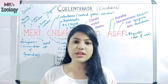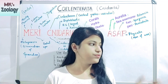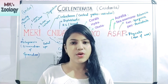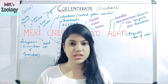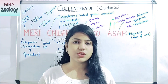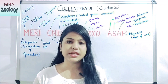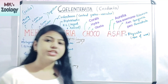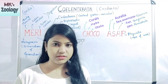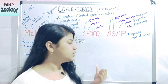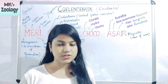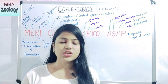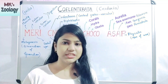The other name of phylum Coelenterata is phylum Cnidaria. The word 'Cnidaria' comes from 'cnidos' — C-N-I-D-O-S — which means stinging cells. From cnidos, the word Cnidaria is derived. Let's see the short trick of phylum Cnidaria.